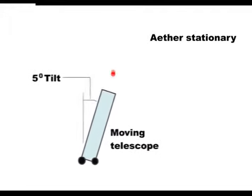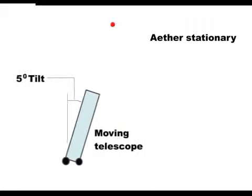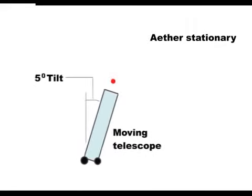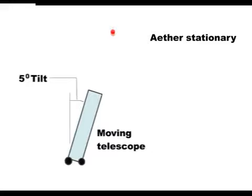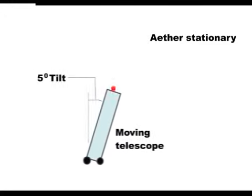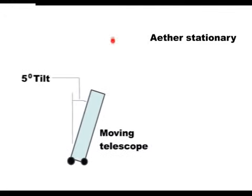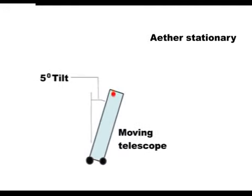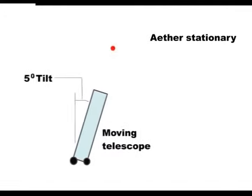So here is the moving telescope filled with water, tipped at 5 degrees, and you can see that the starlight does not now reach the eyepiece at the bottom. This is because the starlight moves much more slowly when passing through water.